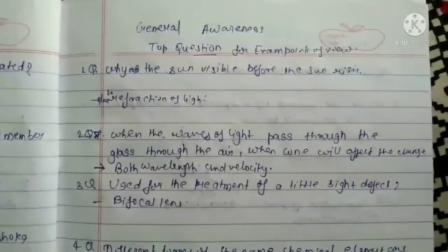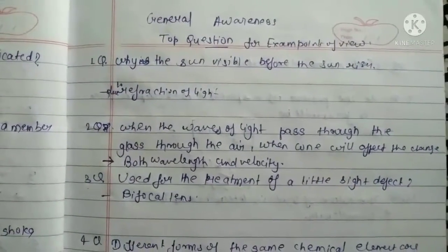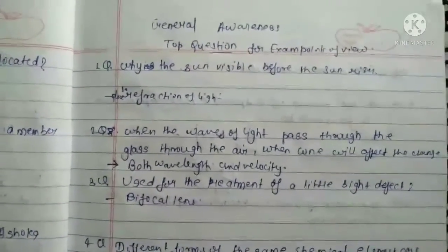Why is the sun visible before the sun rise? Due to refraction of light.